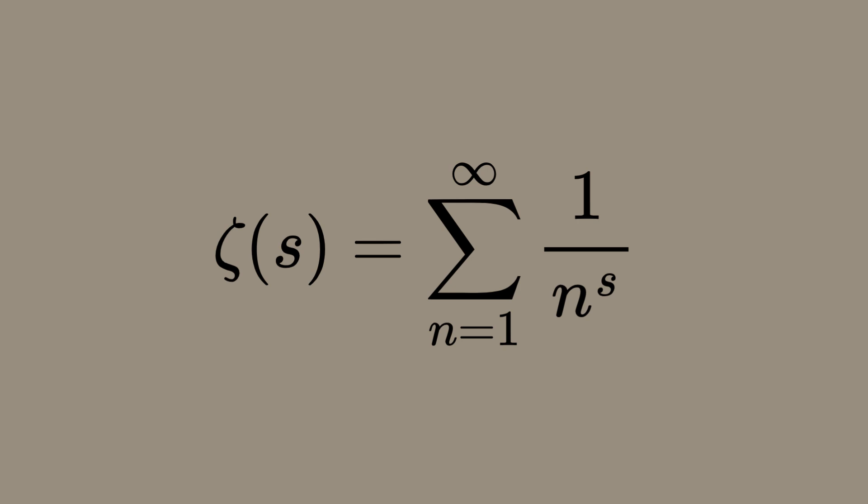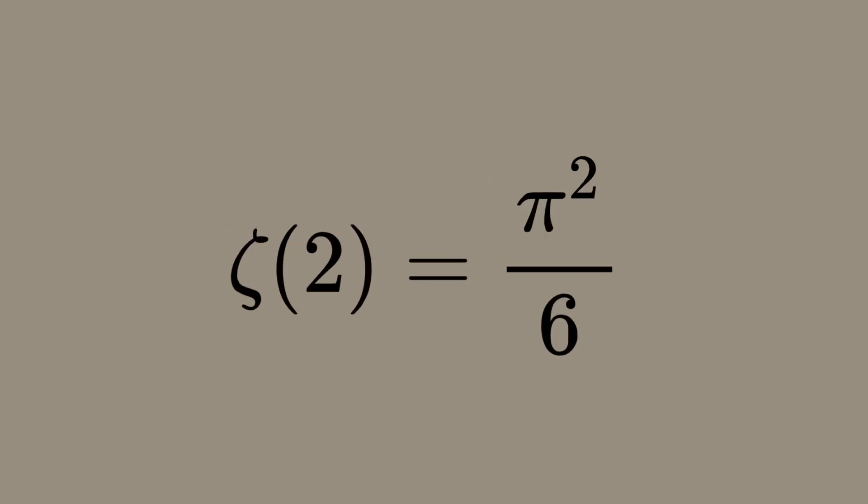This is a generalization of the sum of reciprocals of powers of natural numbers. Euler's discovery that ζ(2) = π²/6 was a special case that provided early insights into this deeper and more complex function.